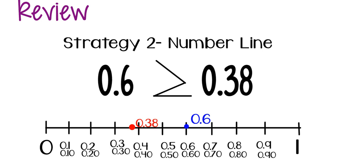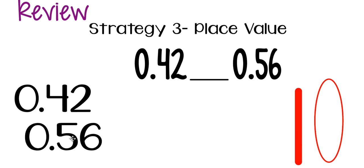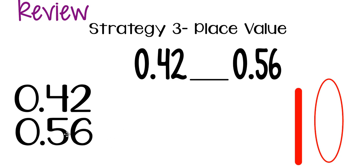The next strategy is our most important one: using place value to compare. This is the most efficient strategy — it will take us the least amount of time. To use this strategy, we first line up our place values by stacking the numbers so that the ones place, tenths place, hundredths place, and decimal points are all aligned. This is a great opportunity to use graph paper to keep things neat.